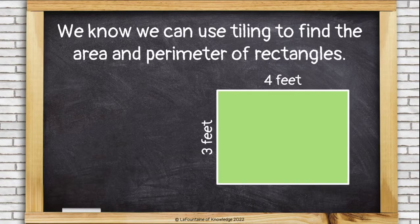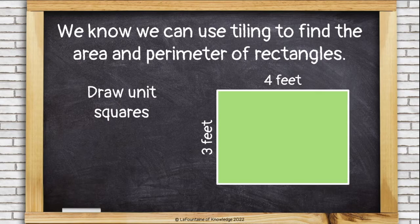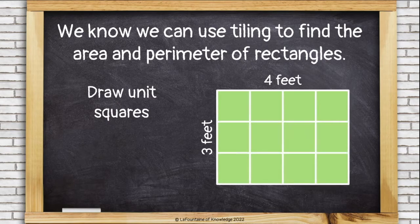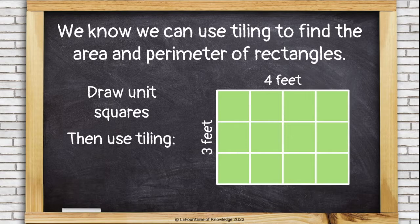We know we can use tiling to find the area and perimeter of rectangles. That means we need to draw unit squares. This rectangle is 4 feet long and 3 feet wide, so we'll draw 4 squares across and 3 squares down. Then we can use tiling. To find the area, that just means counting how many unit squares fill this rectangle, like this.